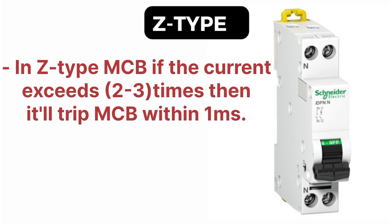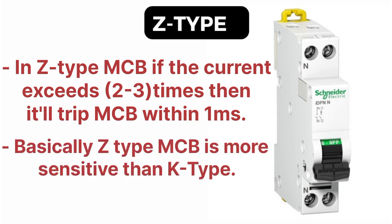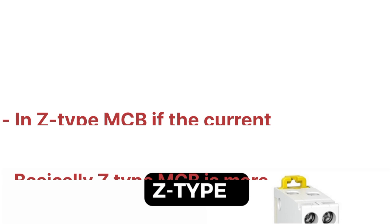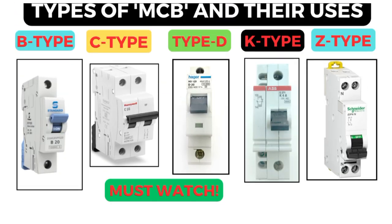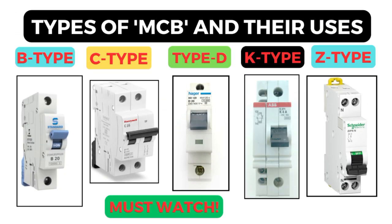From this, you can conclude that the Z type MCB is far more sensitive than the K type MCB. That's all about the types of MCBs and their uses. See you in the next video, thanks for watching.